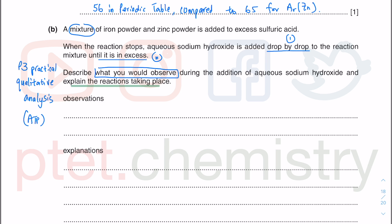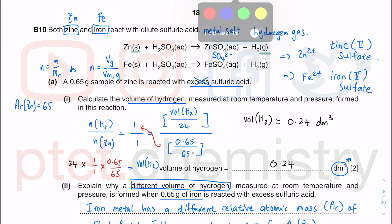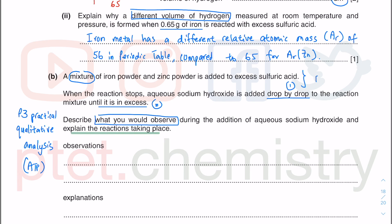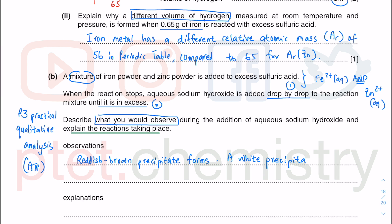We have iron 2 plus because from the earlier reaction we got iron(II) sulfate — iron 2 plus and sulfate SO₄²⁻. And we have zinc 2 plus aqueous. This is a mixture, so you get both things. Zinc hydroxide would be a white precipitate, and iron(II) hydroxide would be a reddish-brown precipitate. So a reddish-brown precipitate forms, and a white precipitate also forms.